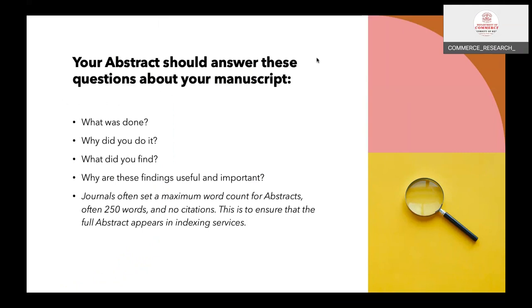The abstract should answer: what was done, why did you do it, what did you find, and why are these findings useful and important? These questions are to be answered by your abstract. Journals often set a maximum word count for the abstract, often 250 words. The abstract should not contain citations. This is to ensure that the full abstract appears in indexing services.